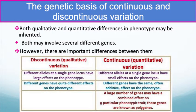The genetic basis of continuous and discontinuous variation: both qualitative and quantitative differences in phenotype can be inherited, and both may involve several different genes. In discontinuous variation, different alleles at a single gene locus have large effects on the phenotype, and different genes have quite different effects. In continuous variation, different alleles at a single gene locus have small effects on the phenotype, and these genes often have an additive effect. A large number of genes may have a combined effect on a particular phenotypic trait — these genes are known as polygenes.